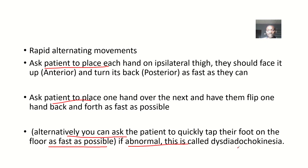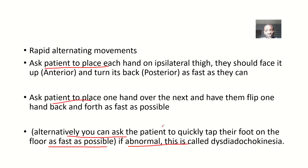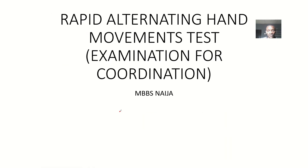If the result is abnormal, it is called dysdiadochokinesia, which is defined as the inability to perform rapid alternating hand movement test. That's it about the rapid hand test and how to identify its abnormality.